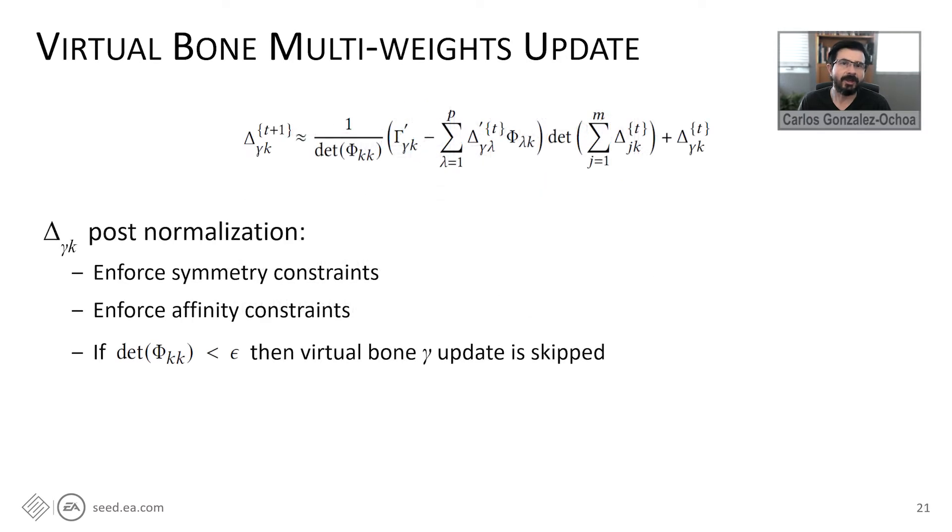After the solver steps, we normalize the multi-weights to enforce symmetry and make sure that all the virtual bonds scalar weights sum to one. If we detect that the determinant of any of the virtual bonds is less than some tolerance, we skip the virtual bond update. This ensures robustness in the algorithm and forces all bonds to be fully utilized.